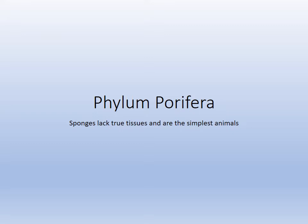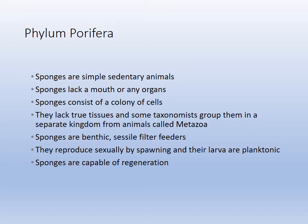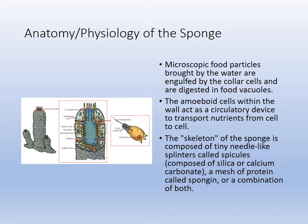Sponges lack true tissues — they're the simplest, belonging to Phylum Porifera. They're sedentary as adults, don't move, and have no mouth or organs. They filter food and oxygen in through their pores. They are a colony of cells that secrete a substance called spongin, like a mesh that holds them together. They lack true tissues. Their base cell has a flagella that beats back and forth — called a collar cell — that creates water flow and allows the cells to absorb oxygen and engulf food.